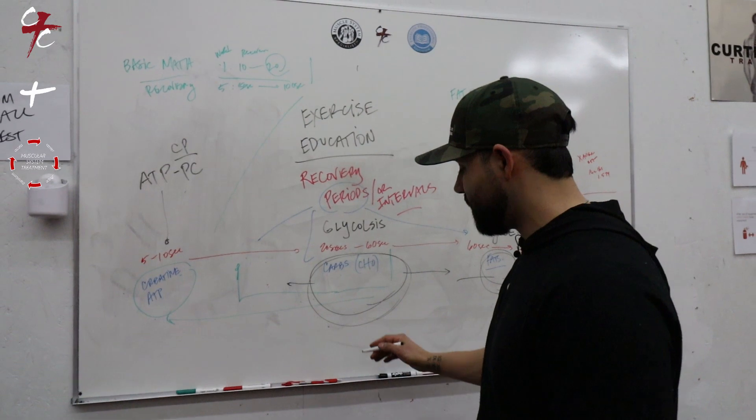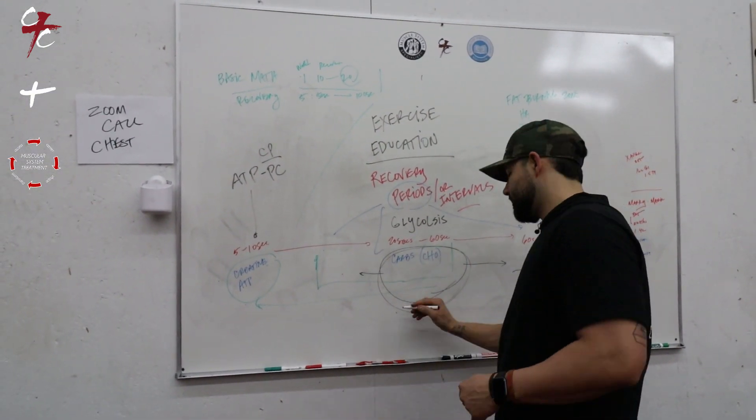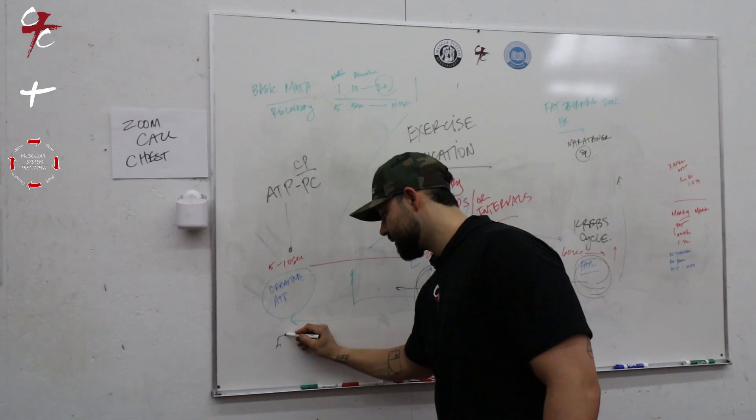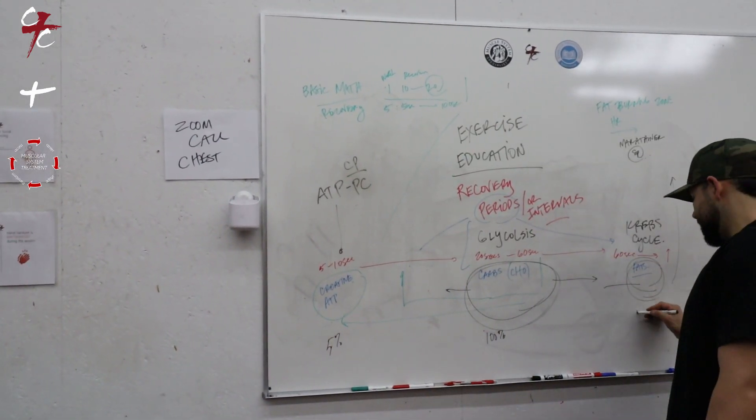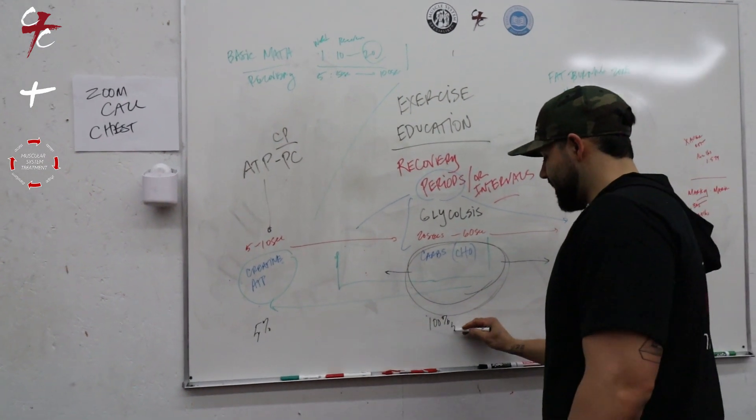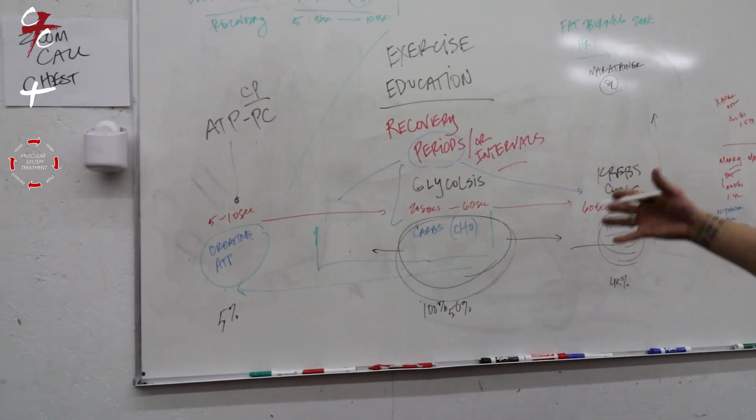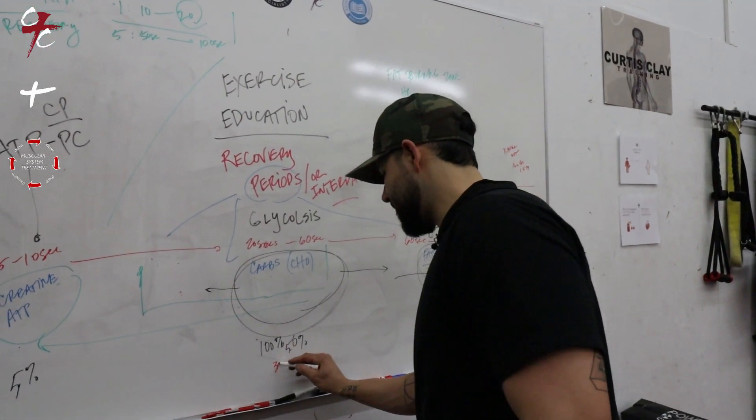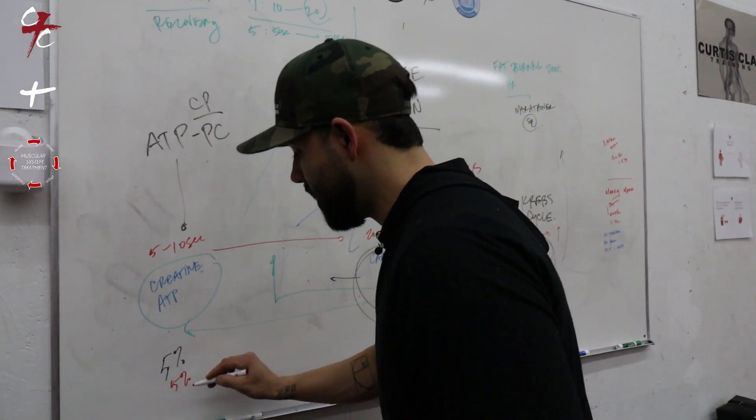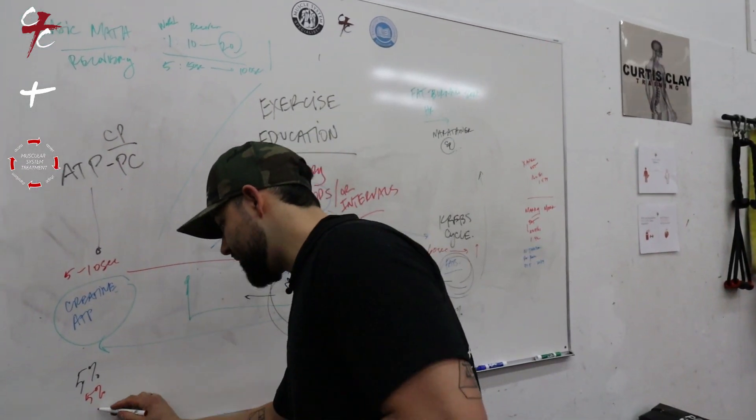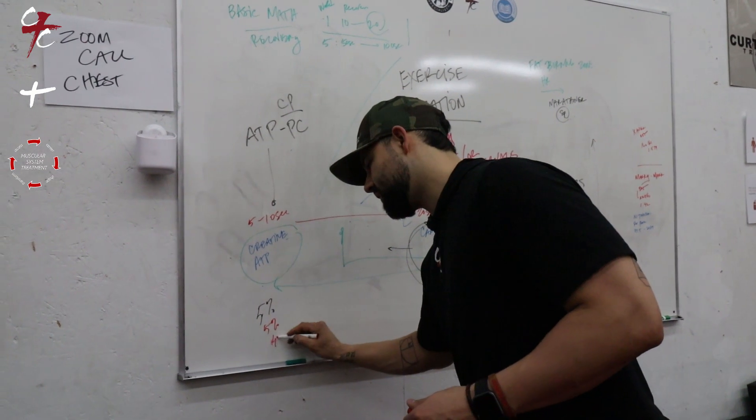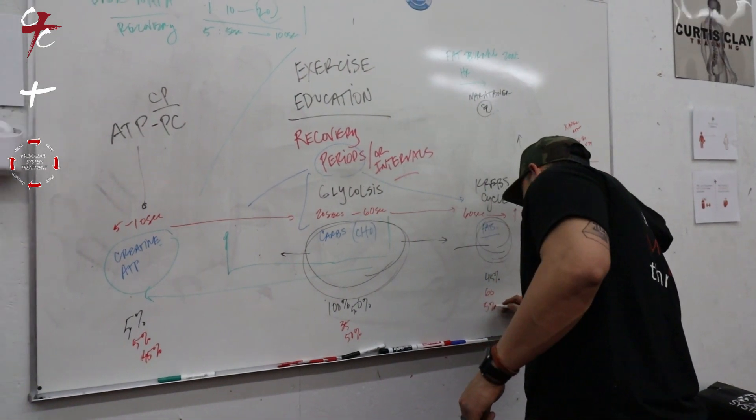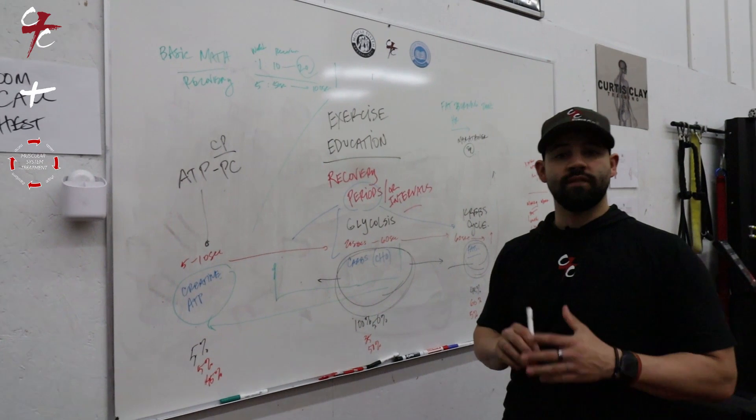All these systems are going to be working at a time. Say it's one hundred percent capacity, and depending on your rest periods and what you're doing, say you're using five percent ATP-PC, forty-five percent glycolysis, and fifty percent Krebs. It may shift if I'm doing more cardio or needing Krebs, it might shift to sixty, thirty-five, five. Or if I'm doing sprints it might turn into fifty, forty-five, five.